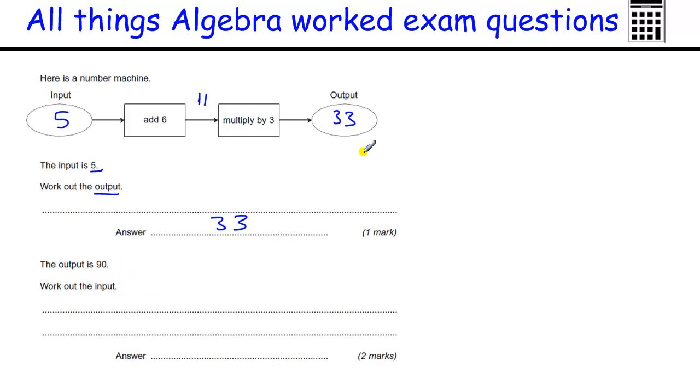Now, if we know the output is 90, and we're trying to find what goes in to make it 90, then we could try lots of values in here, just getting bigger and bigger until we get to the right answer. So we could try 10, add 6 is 16, times by 3 is 48. 20, add 6 is 26, times by 3 is 78, and so on, so we get pretty close there.